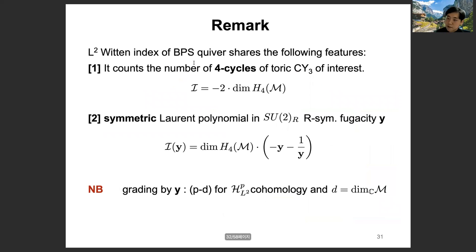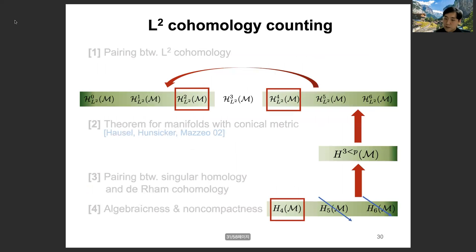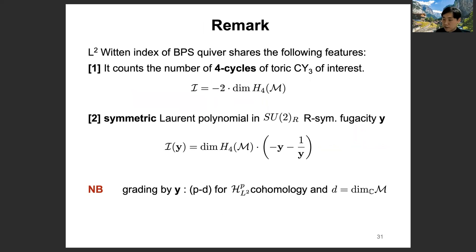We can refine this based on the grading by J_+ + D — the so-called Y — which is nothing but the SU(2)_R symmetry that the one-dimensional supersymmetric quiver enjoys. This Y-fugacity grades the elements of cohomology by P−D. For instance, some elements involve Y^(−3), and H6 elements involve Y^(D+3). After introducing this grading, we can refine 2·dim(H4) into pieces, and the Witten index is nothing but a symmetric or palindromic polynomial in the velocity variable. This property is quite essential.